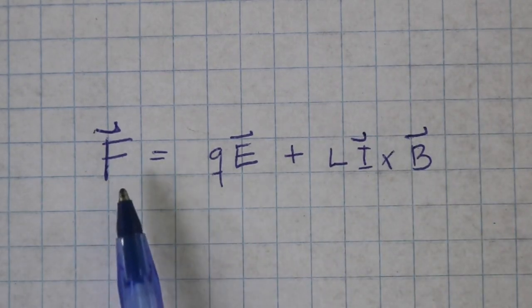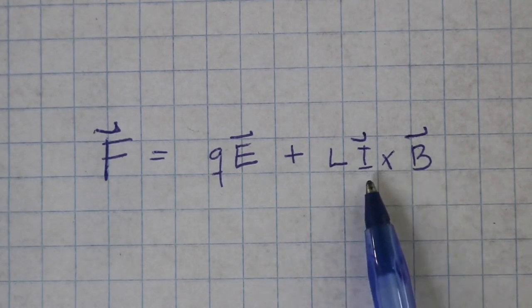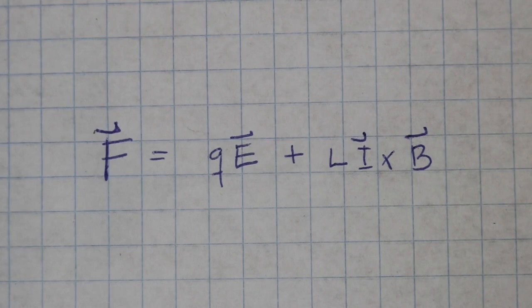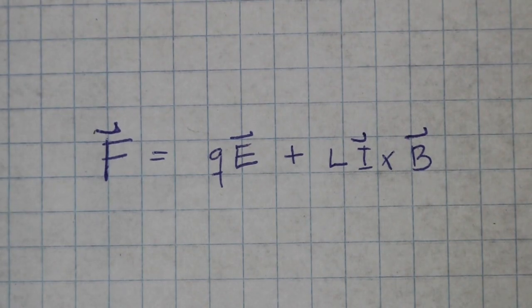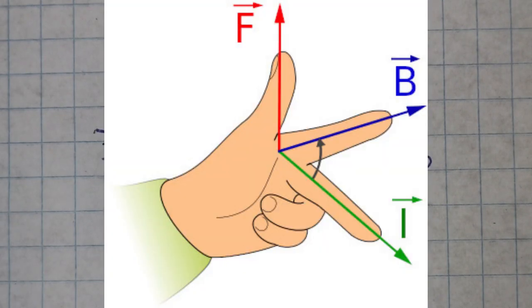Therefore, the direction of the force is perpendicular to both the direction of the current and the direction of the magnetic field. We can find the direction of the force using the left hand rule, with the middle finger pointing in the direction of the current and the index finger pointing in the direction of the magnetic field. Then the thumb will indicate the direction of the force.